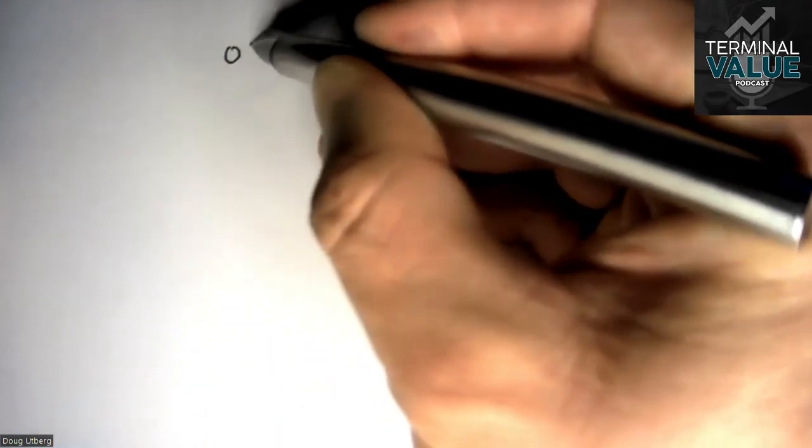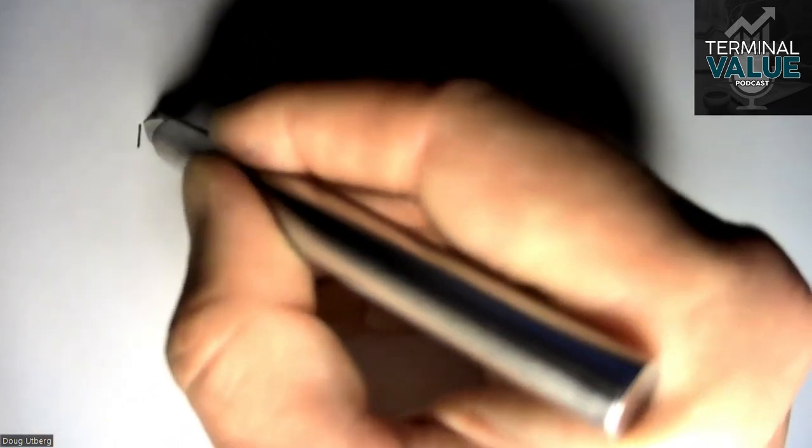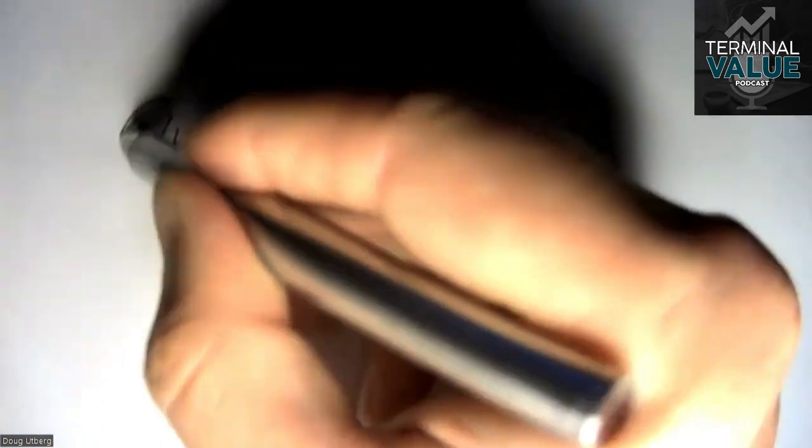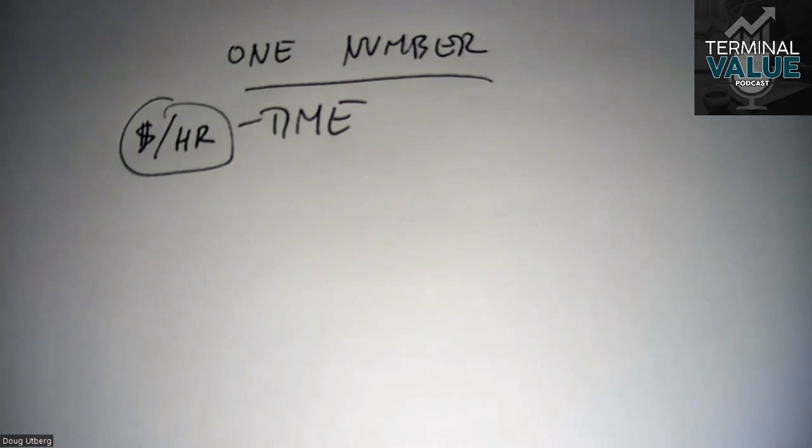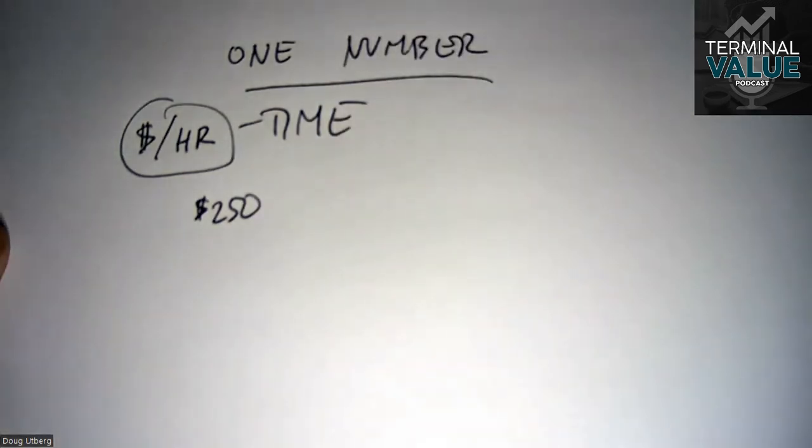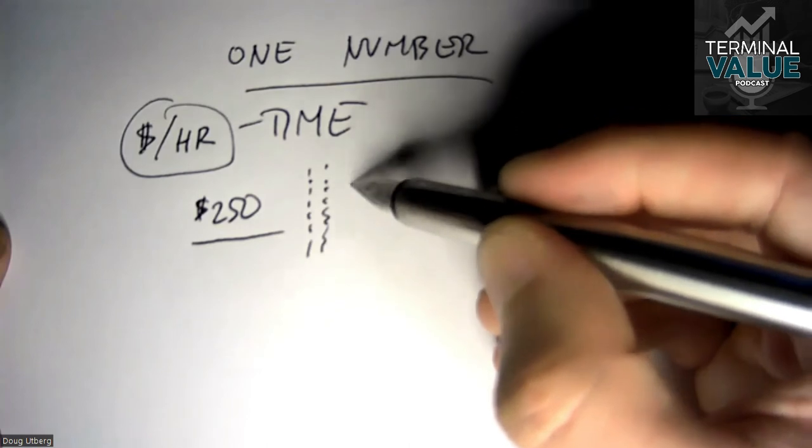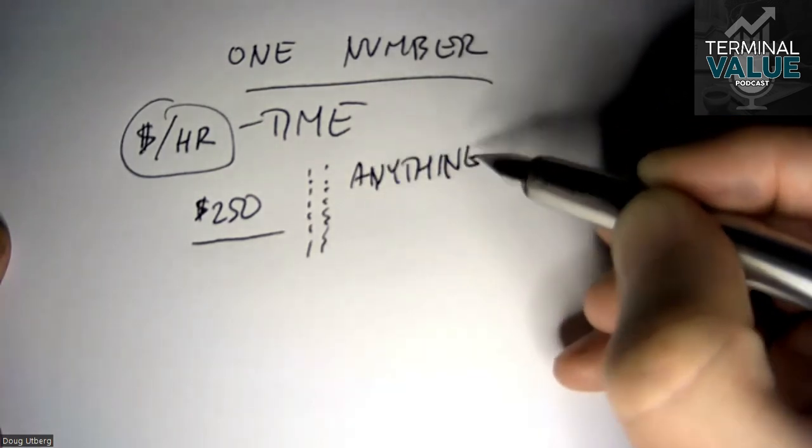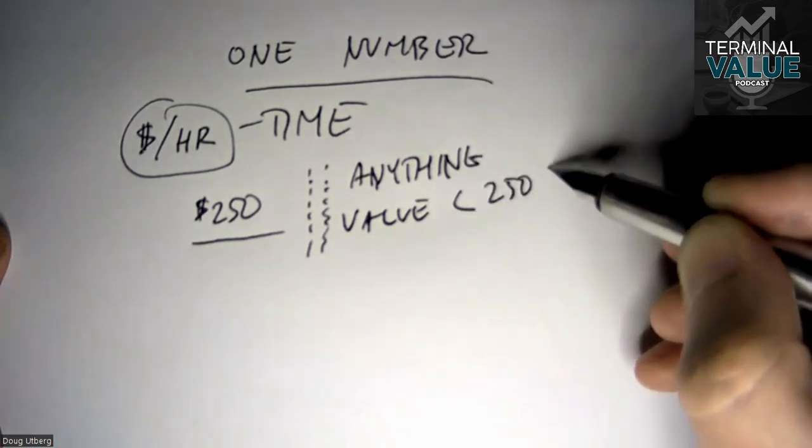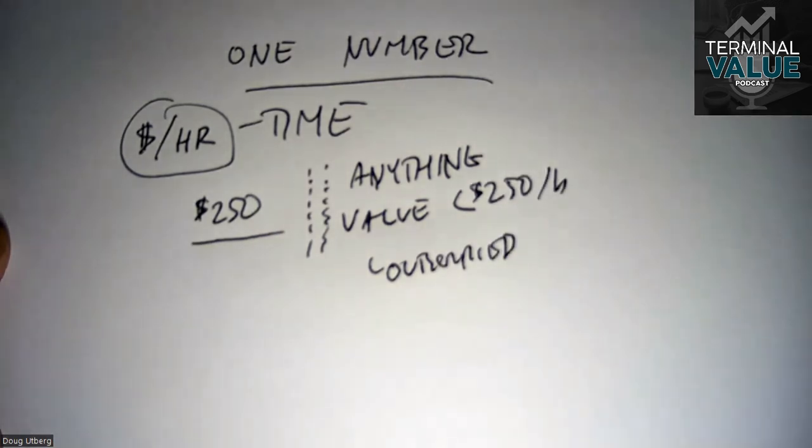A lot of people have heard about the one number idea. What is the value per hour for your time? Let's say the value per hour for your time is $250, maybe lower, maybe higher, but for this conversation, let's say it's $250 an hour. The practical implication is that anything in your business with a value under $250 an hour should be outsourced, either to another company or another person.